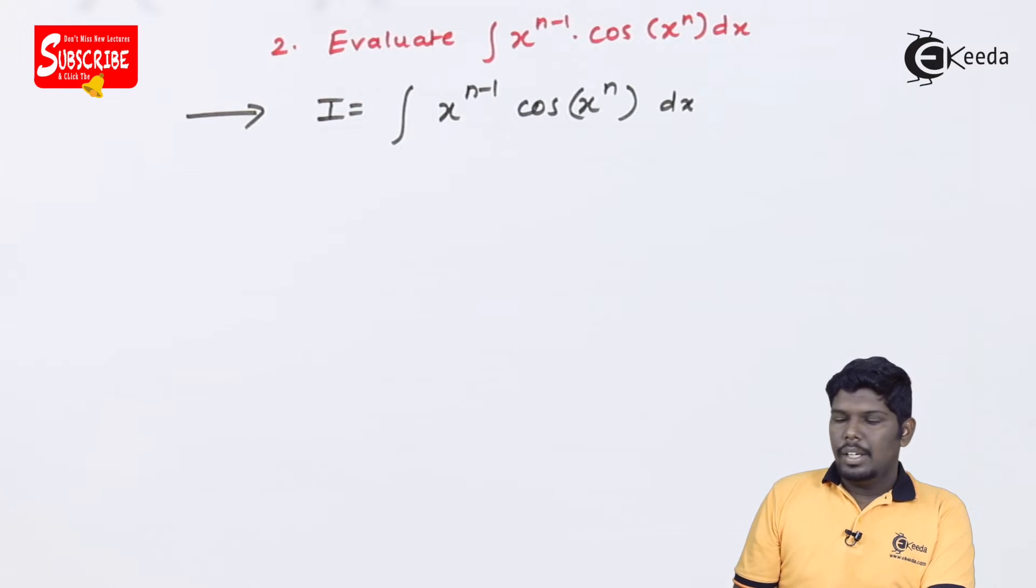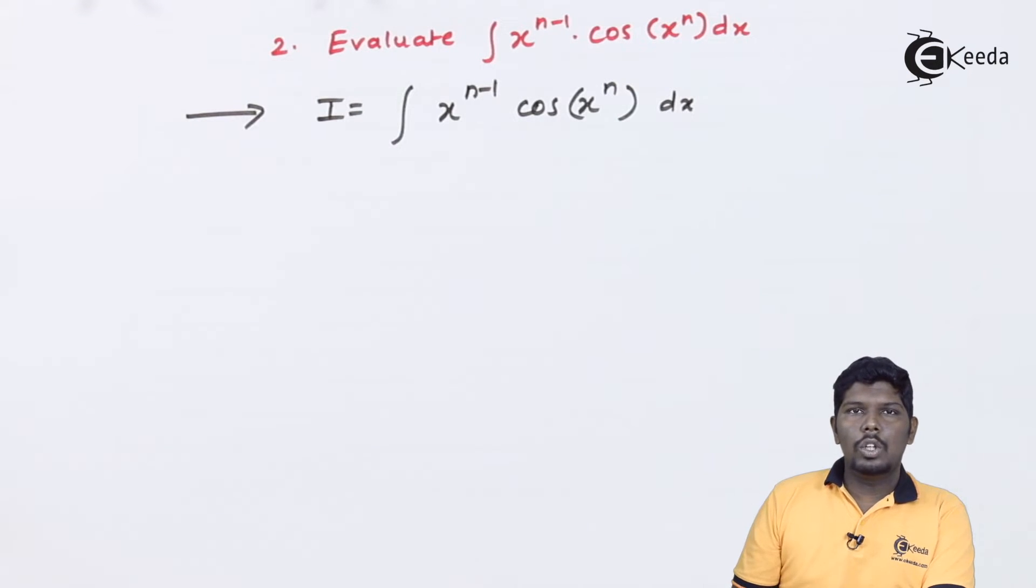Here also friends we know that integration of cos x raise to n is not possible. For that we must substitute a part as t, after that taking its derivative the remaining part must be converted in terms of dt.